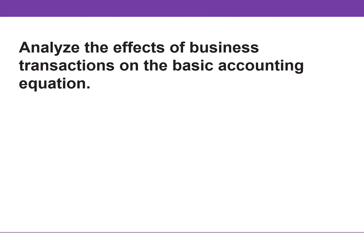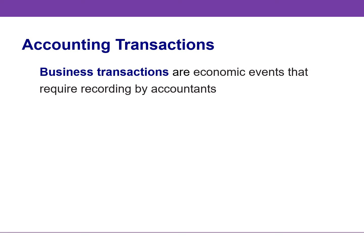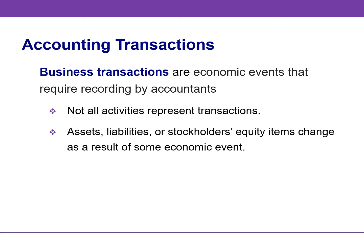In this video, we will analyze the effect of business transactions on the accounting equation. Business transactions are economic events recorded by accountants. Companies carry on many activities that do not represent business transactions, such as hiring employees, talking with customers, and placing orders. We must analyze each event to find out if it affects the accounting equation, and if it does, we record the transaction.